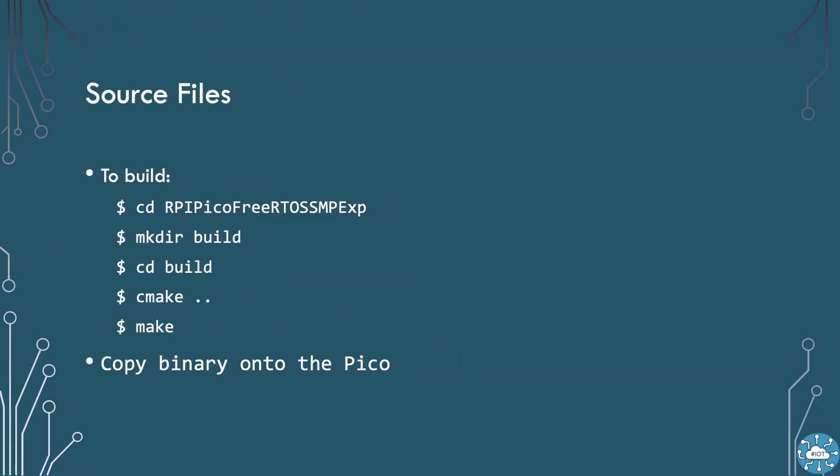To build the project yourself, create a folder called build. From within the build folder, issue the command cmake dot dot. Then when that completes, the command make. This will give you the ELF or UF2 file in the source folder under build. You can then use SWD flashing or boot select flashing of the Pico.